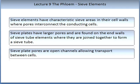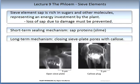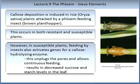Sieve plate pores are open channels allowing transport between cells. Sieve element sap is rich in sugars and other molecules, representing an energy investment by the plant. Therefore, loss of sap due to damage must be prevented. Short-term sealing mechanisms involve sap proteins, or slime. Long-term mechanisms include closing sieve plate pores with callose. Callose deposition is induced in rice plants attacked by phloem-feeding insects such as the brown planthopper or aphid, occurring in both resistant and susceptible rice plants. However, in susceptible plants, feeding by insects also activates genes for the callose-hydrolysing enzyme, which unplugs the pores, allows continuous feeding and results in decreased sucrose and starch levels in the leaf.